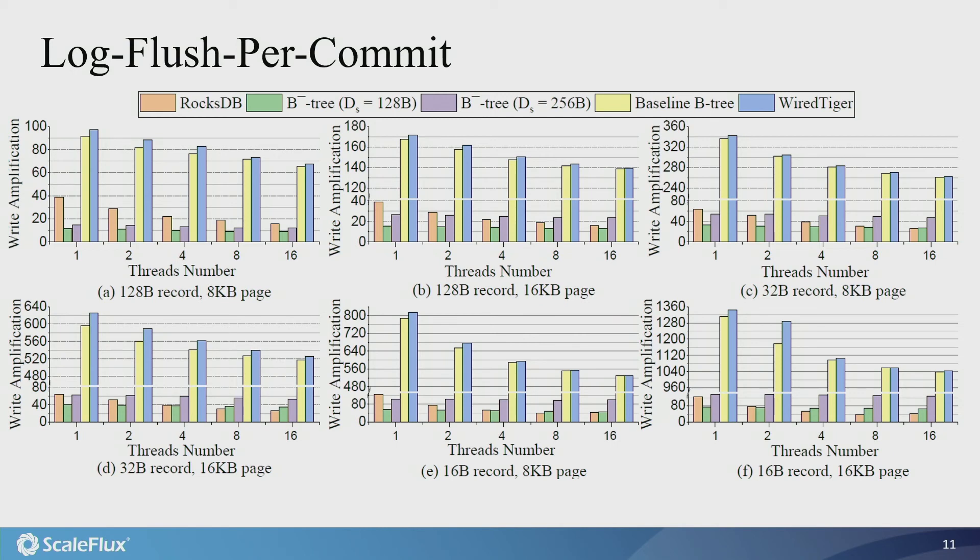Compared with experiments under the log flush per minute policy, the write amplification of B-minus tree remains almost the same, while the write amplification of the other three cases noticeably increases, especially when the number of client threads is small, because of the higher log-induced write amplification. As a result, B-minus tree can more effectively close the B+ tree versus LSM tree write amplification gap and be able to achieve better than RocksDB write amplification under more scenarios.